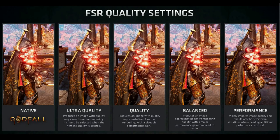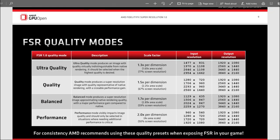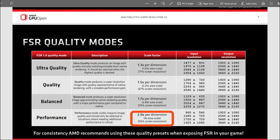FSR has four image quality settings: ultra quality, which preserves the best image quality possible, all the way down to performance, which has the worst image quality. From the reference document you can find the internal rendering resolution for each quality setting. FSR works best when targeting 1440p or 4K — at 1080p it doesn't have as much data to work with so image quality takes a bigger hit. For ultra quality use a scale factor of 1.3, 1.5 for quality, 1.7 for balanced, and 2 for performance.